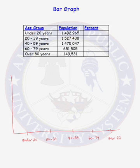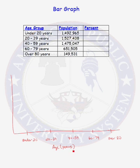For our data, we have five different categories. Those categories go on the x-axis: under 20, 20 to 39, 40 to 59, 60 to 79, and over 80. We always need to label our axes. So we have age, and age is in years.